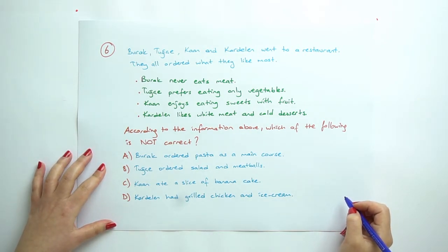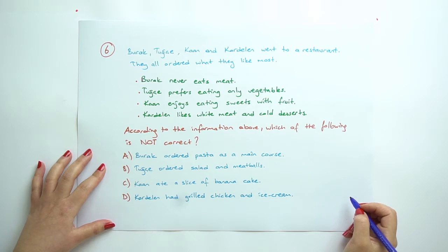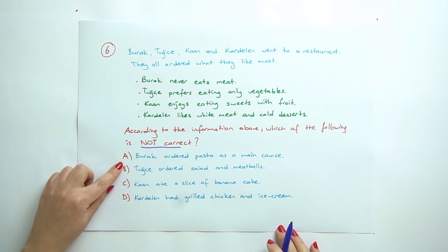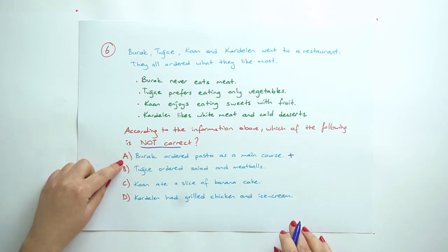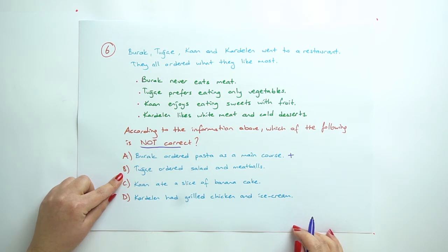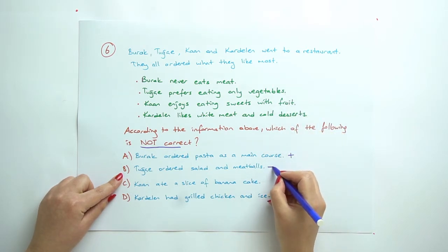Question 6: According to the information above, which of the following is not correct? Burak, Tuğçe, Kaan, and Kardelen went to a restaurant. They all ordered what they like most. So be careful, not correct. We are going to find option A: Burak ordered pasta as the main course. This could be, yes, because he never eats meat. We can say this one. Tuğçe ordered salad and meatball. Salad is okay, but meatballs aren't because she prefers only vegetables here.